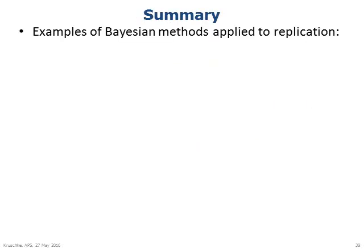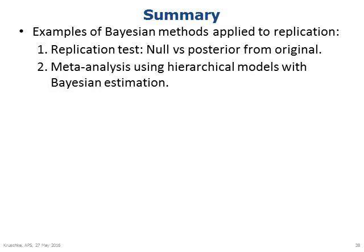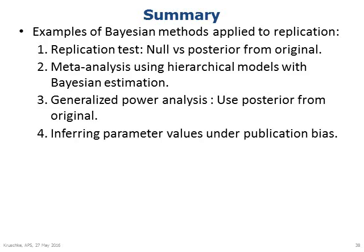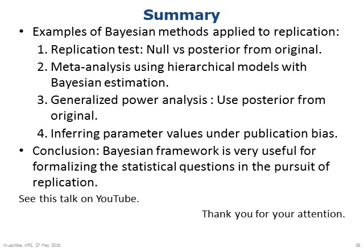In summary, I've surveyed examples of Bayesian methods applied to replication: a replication test to see if the replication data were closer to the null hypothesis or to the posterior from the original; meta-analysis using hierarchical models with Bayesian estimation; generalized power analysis using the posterior from the original; and inferring parameter values under publication bias. In conclusion, the Bayesian framework is very useful for formalizing the statistical questions in the pursuit of replication. You can see this talk again on YouTube — thank you for your attention.